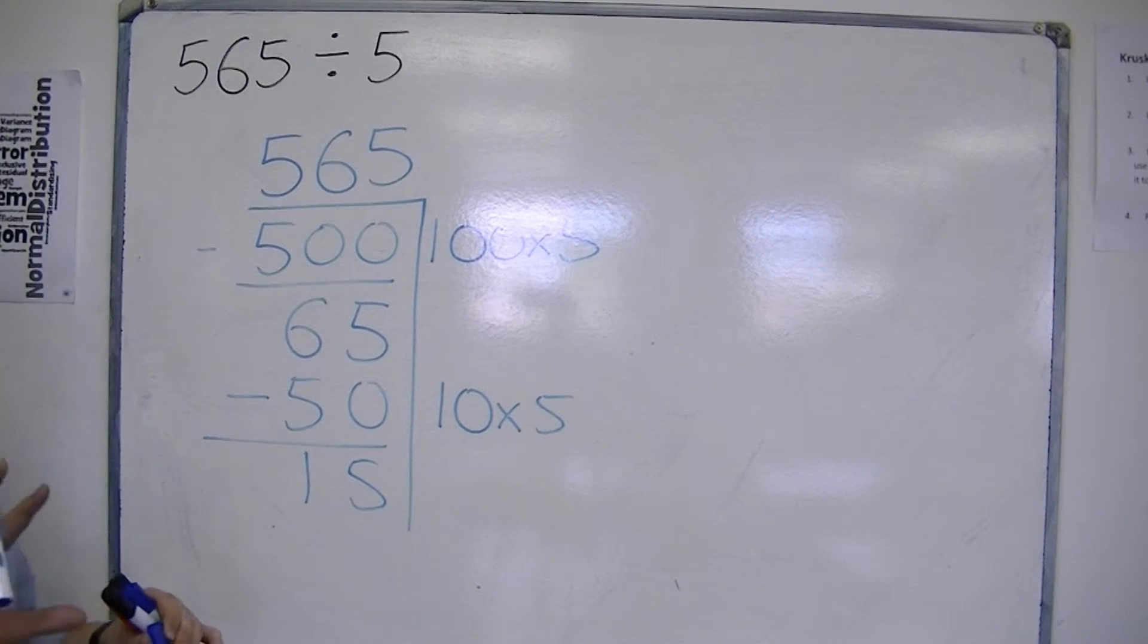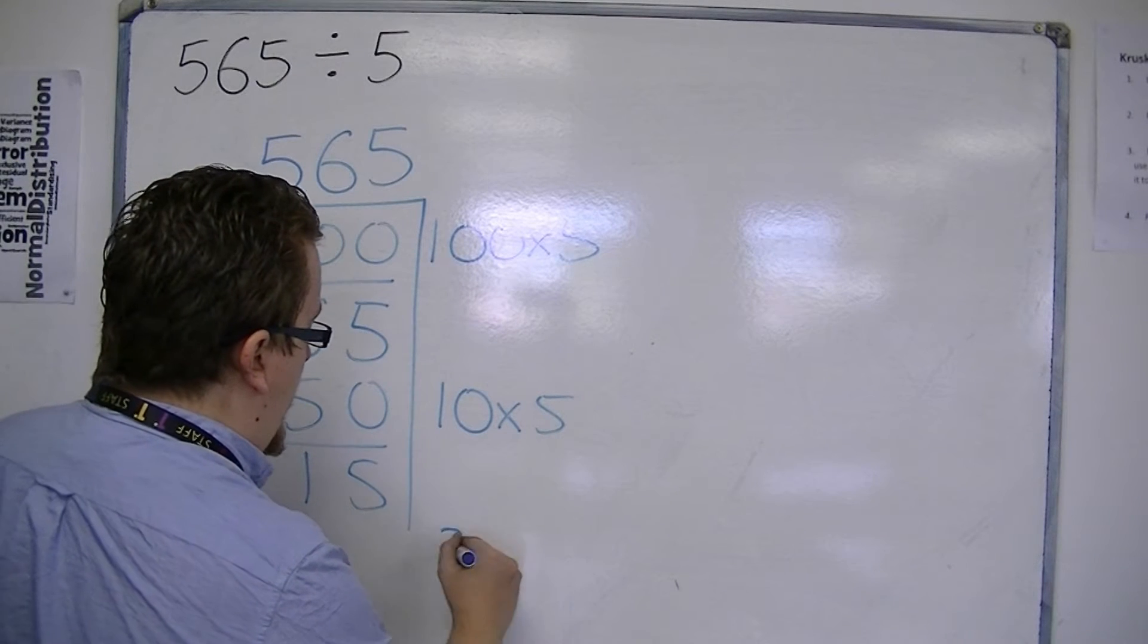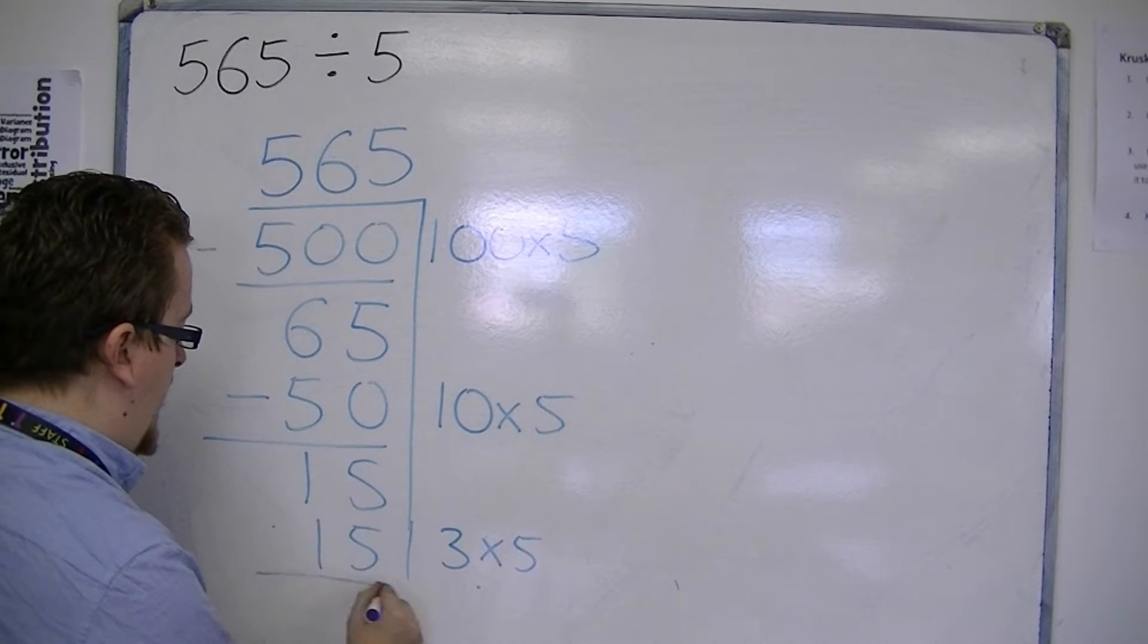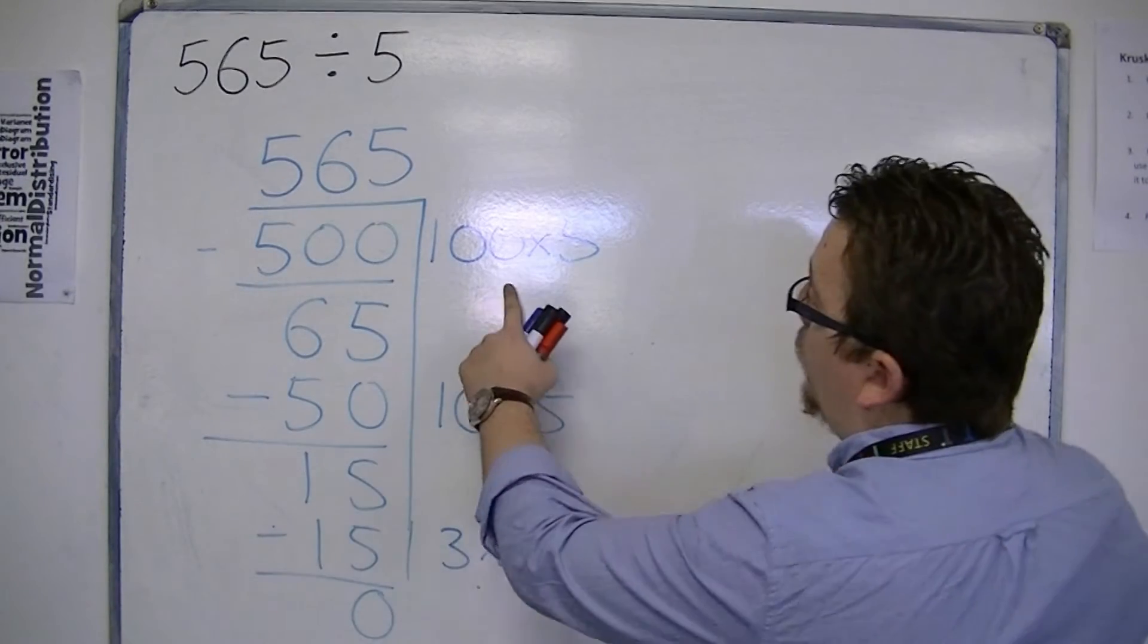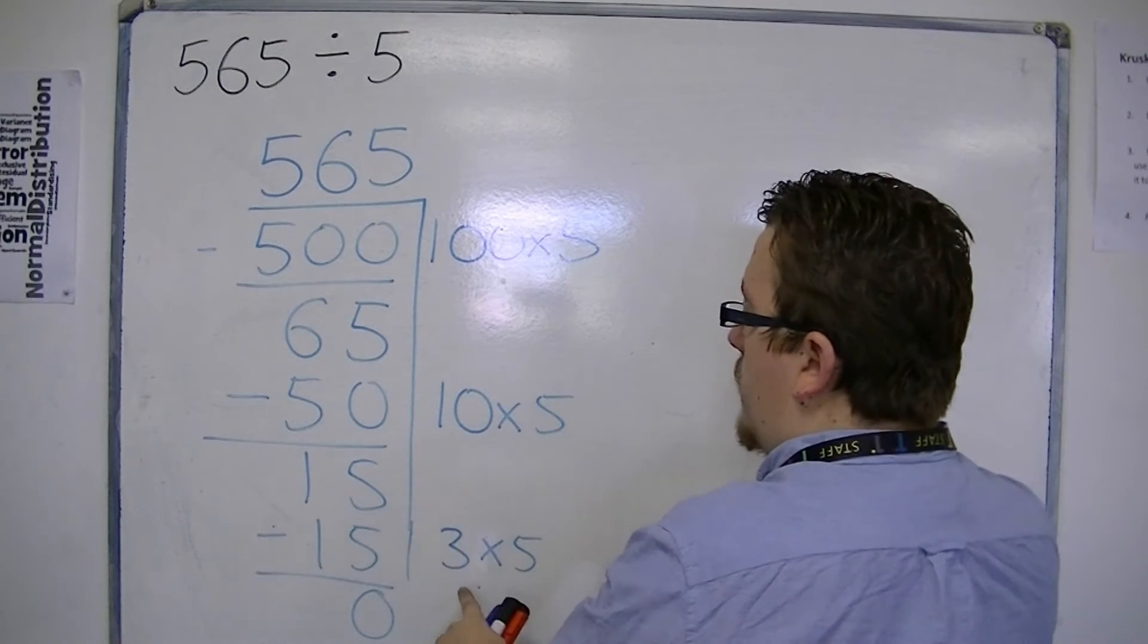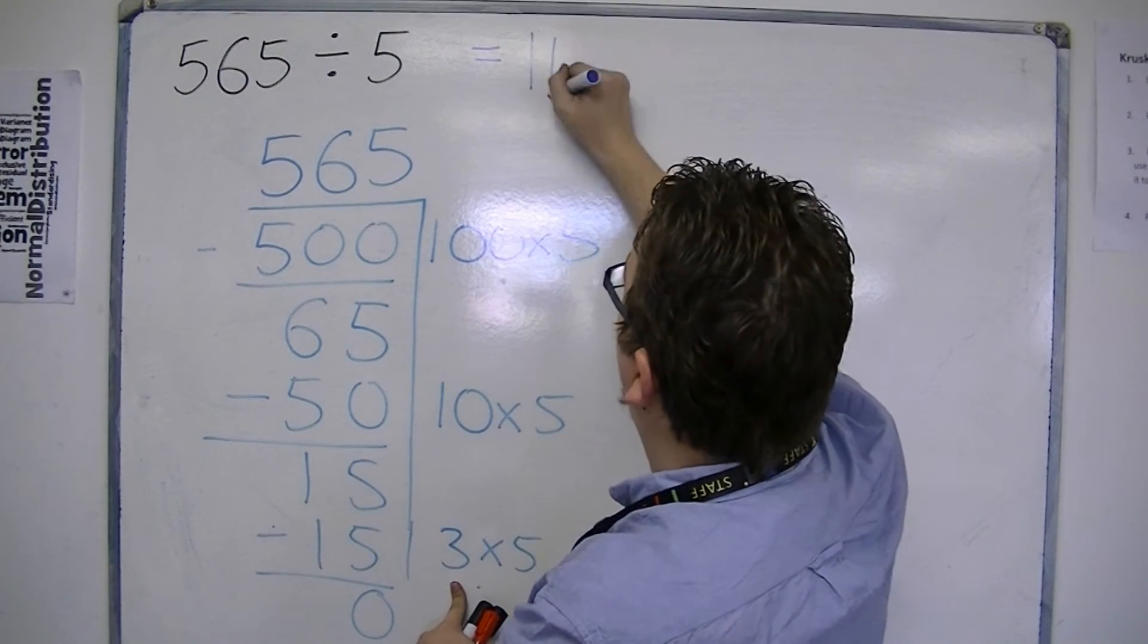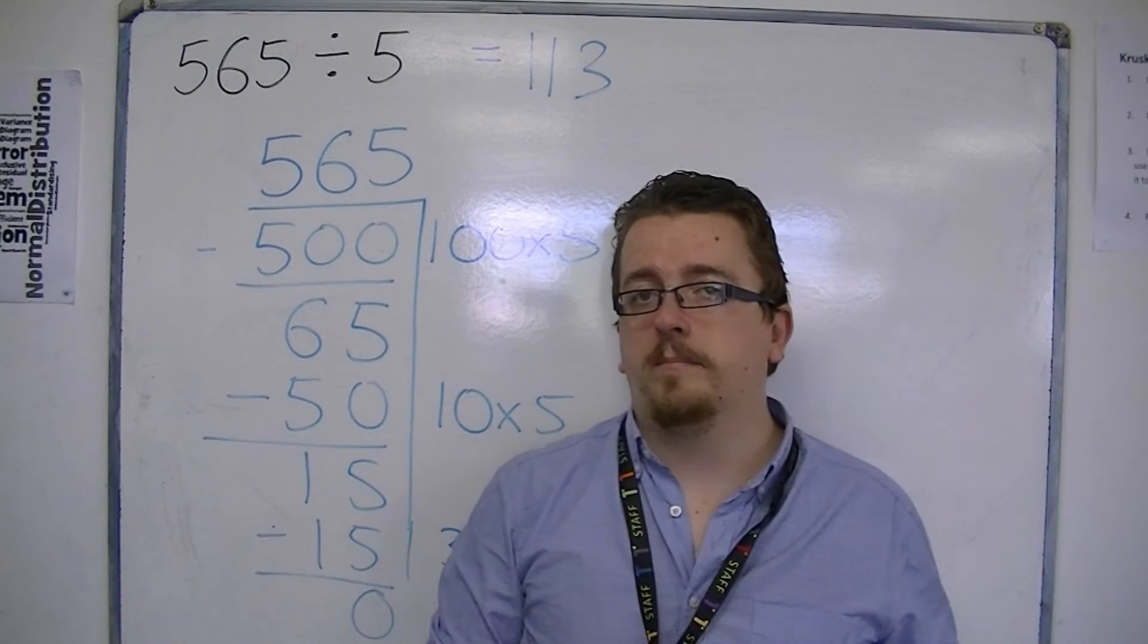Ah, right. Now I know that 15 has three fives in it. So I can do 3 times 5 is 15. 15 take away 15 is 0. So my answer is 100 plus 10 plus 3. So the answer is 113. And that is the chunking method.